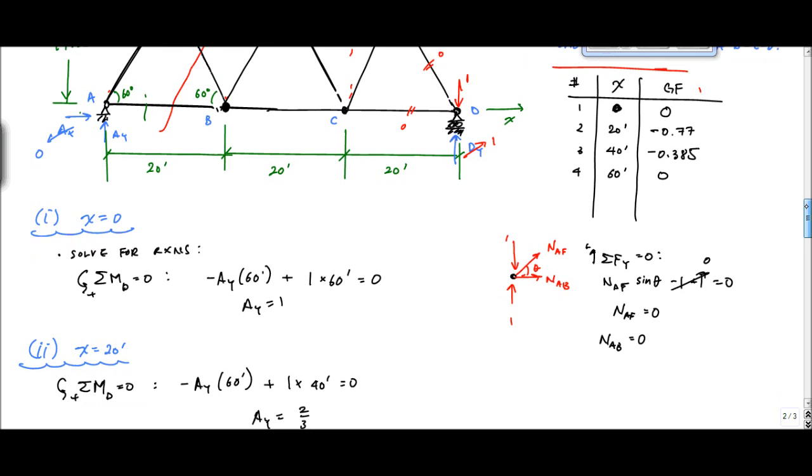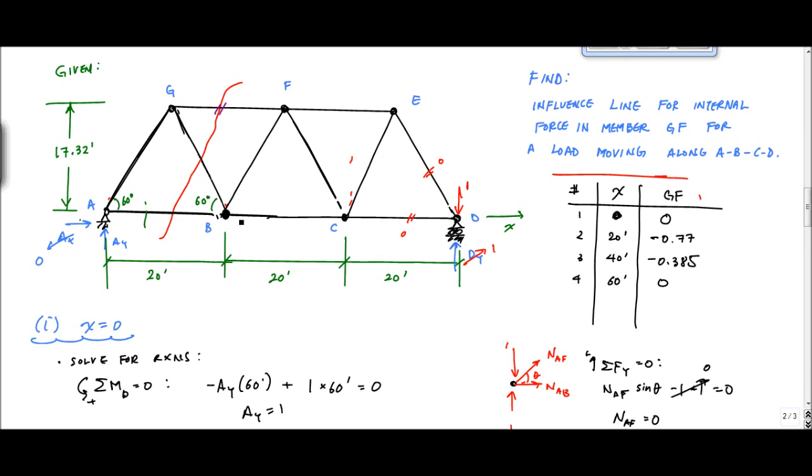So the force in member GF when the unit load is at point D is 0. And now I can draw my influence line as my load moves from A, B, C to D. I can finally draw this here, and my influence line would look like so. So I'm going to draw a nice, clean graph for you. This is X right here. This is at 0. This would be the force, I'll call this NGF. So the force, or the unit force in GF, or percentage of the load. So at 20 feet, at 40 feet, at 60 feet.